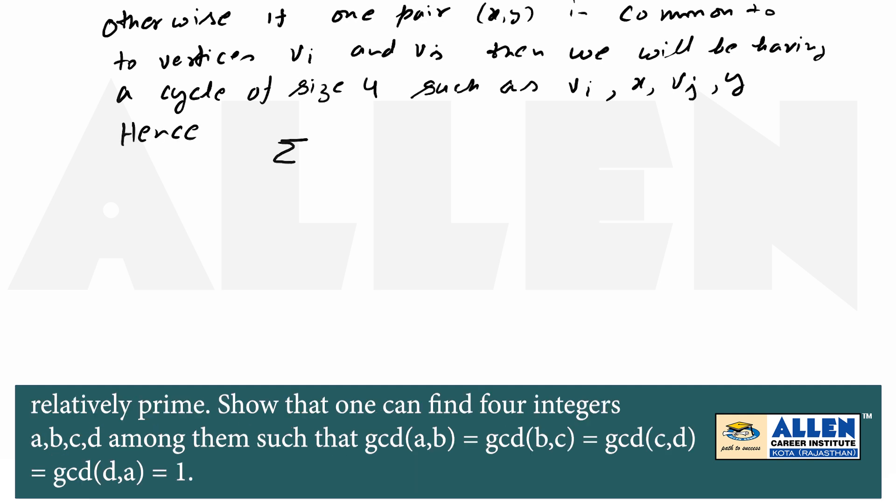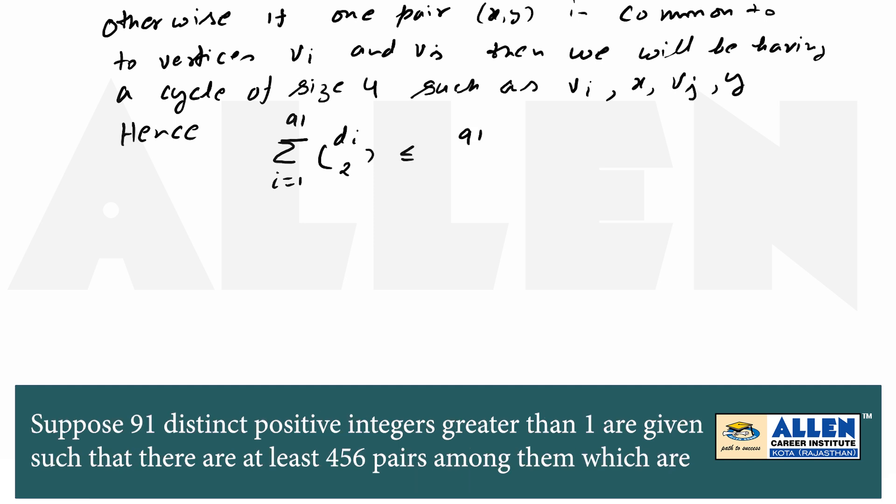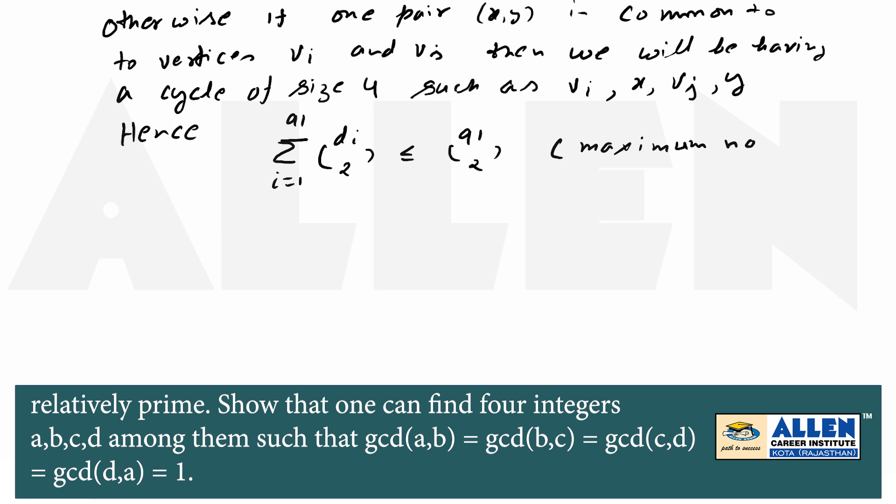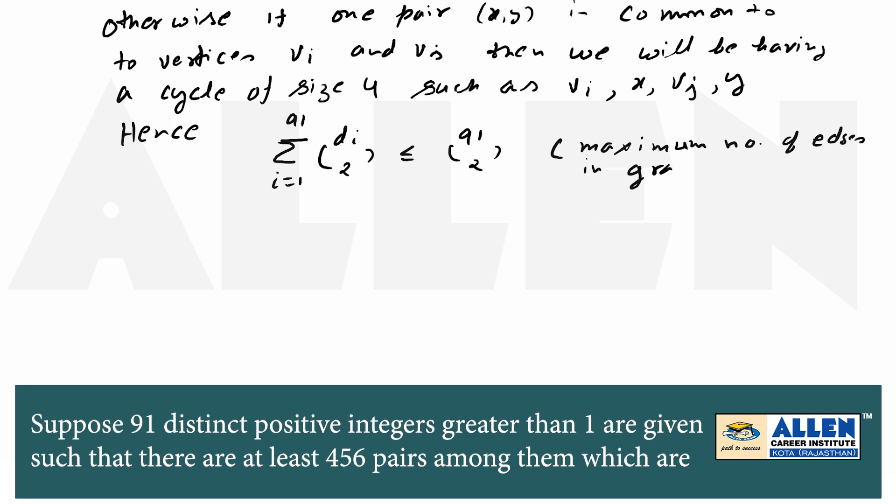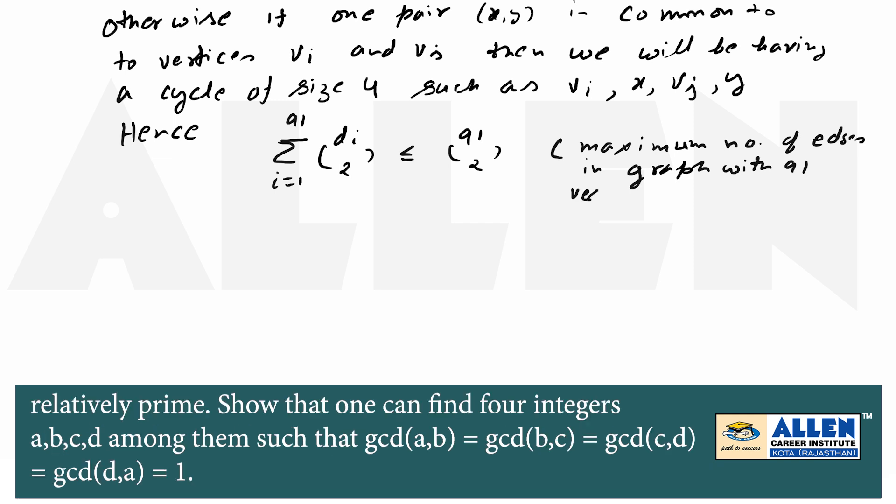Hence, sigma i from 1 to 91 di C2 less than equal to 91 C2, the maximum number of edges in a graph with 91 vertices.